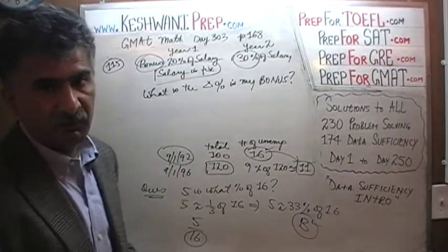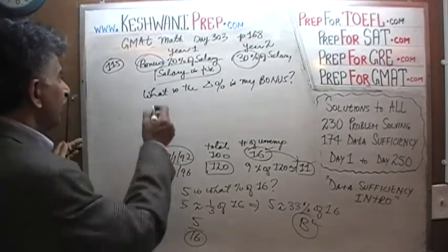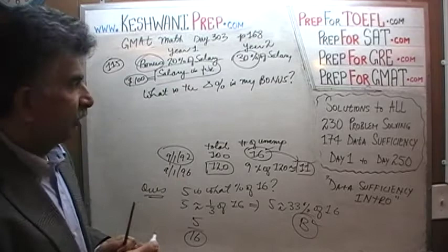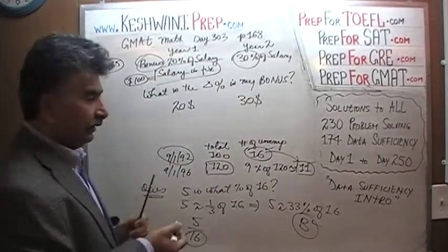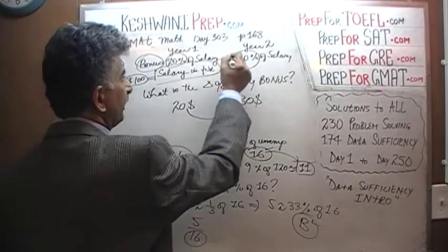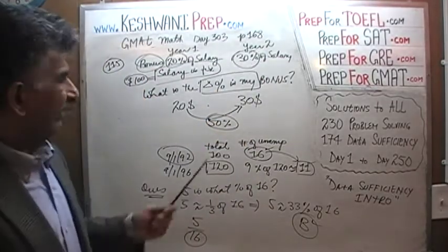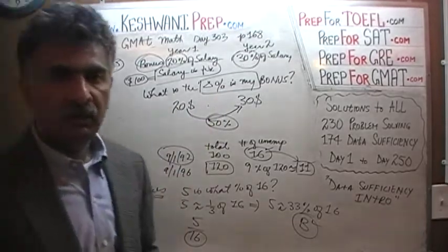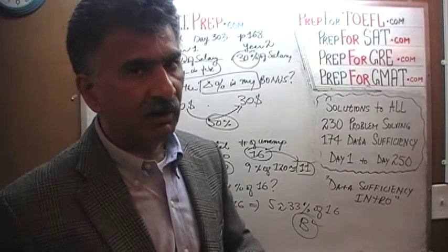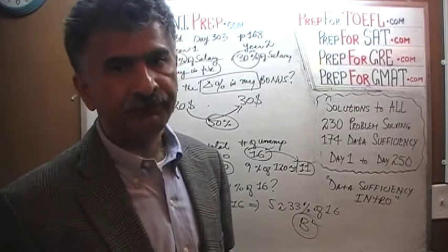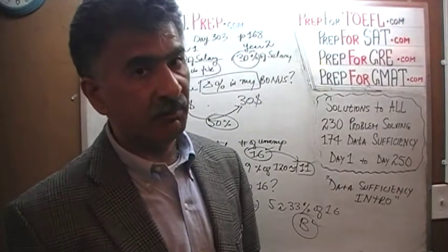It goes from 20% to 30% — that is not a 10% increase in the bonus itself. Let's pretend my salary was $100. In year 1 my bonus was $20; in year 2 it is $30. That represents a 50% change in my bonus — not 10%. Going from 20% of salary to 30% of salary is a 50% increase in the bonus amount. For every dollar I got in bonus last year, this year I got $1.50. If my bonus was $2,000 last year, this year I got $3,000 — that's a 50% increase.